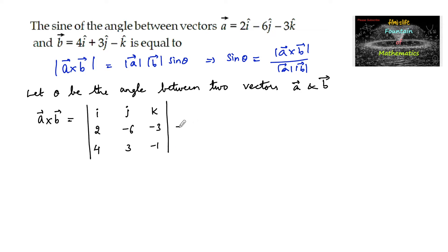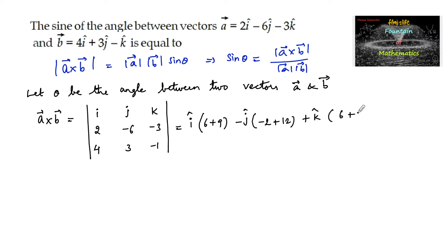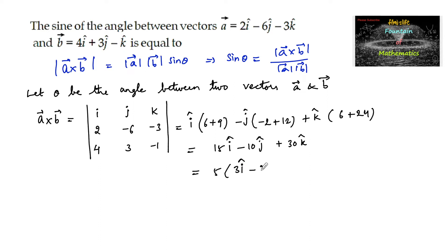Finding the determinant: i times (6 + 9) minus j times (−2 + 12) plus k times (6 + 24), which gives 15i − 10j + 30k. We can factor out 5 to get 5 times (3i − 2j + 6k).